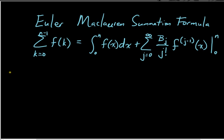Brian had mentioned that he had seen several proofs of this formula but they were pretty non-intuitive, and I told him that I remembered an old argument that I think is actually pretty close to Euler's original argument for why this formula should be true. So anyway, if you want a rigorous proof this is not going to do it, but if you want to just see where this formula comes from it's really pretty easy.